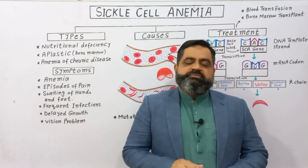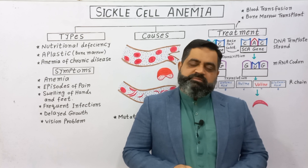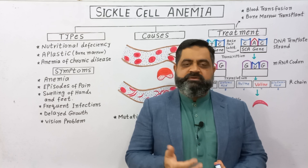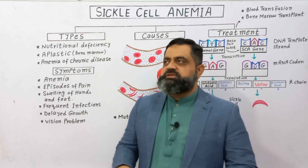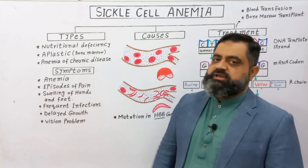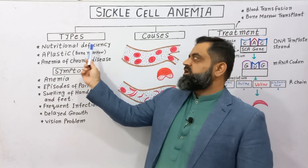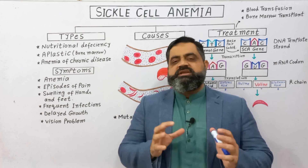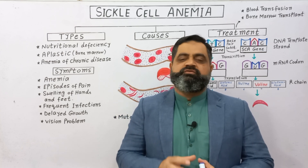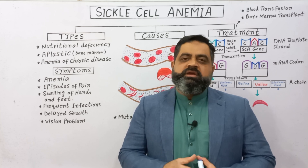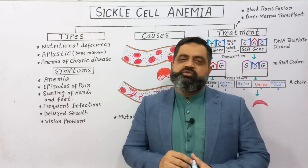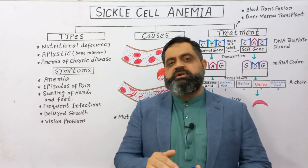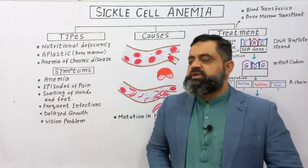There are different types of sickle cell anemia. As you know, anemia is a deficiency of blood, especially red blood cells. There are three major types. The first is nutritional deficiency — nutrients like iron and vitamin C are very essential for hematopoiesis, especially red blood cell formation. If there is a lack of these nutrients in the diet, a person can suffer from anemia or sickle cell anemia.